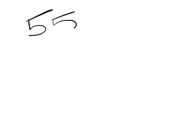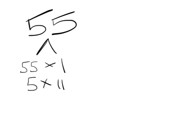Try for yourself: is the number 55 prime or composite? Pause the video and work it out. Okay, we're back. For 55, you've got 55 times 1 — if it were just that, it'd be prime. But there's also 5 times 11, which makes it a composite number.